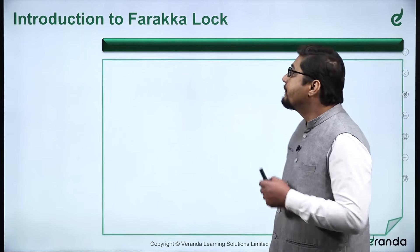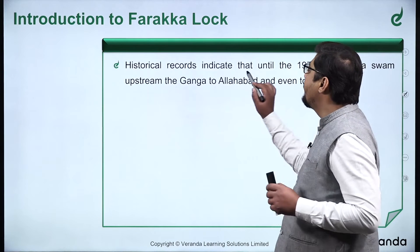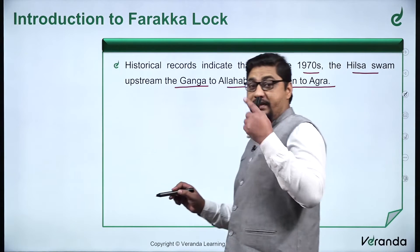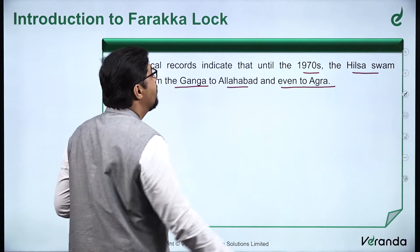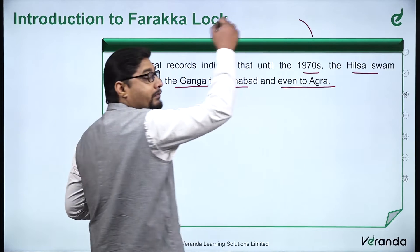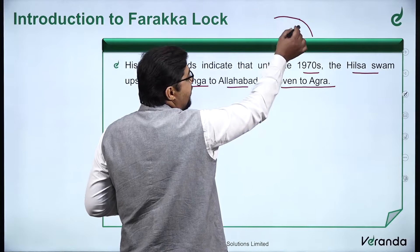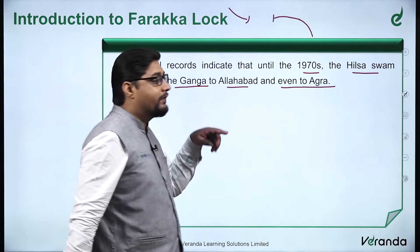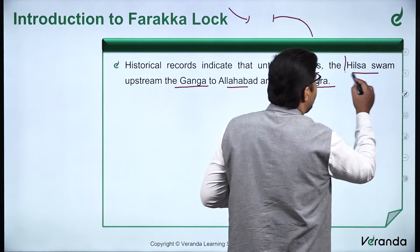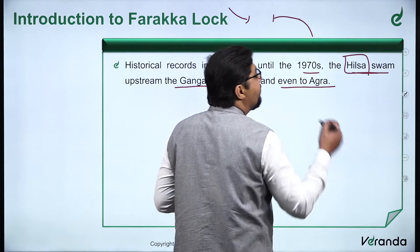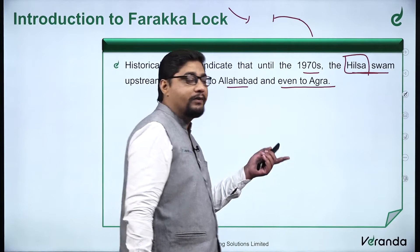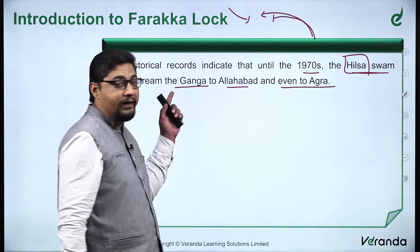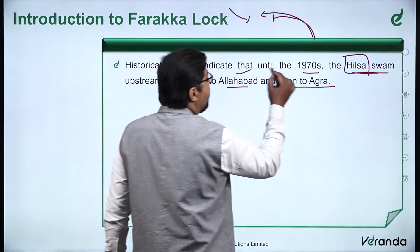Let's begin by introducing ourselves to the Farakka Lock. Historical records indicate that until the 1970s, the Hilsa swam upstream the Ganga to Allahabad and even to Agra. Upstream means against the direction of flow. Taking the Ganga from the Bay of Bengal upward, it reaches Uttar Pradesh and Bihar. Earlier, this fish — the Hilsa — which lives in both salt water and fresh water, used to travel upstream and was found as far as Allahabad or even Agra.